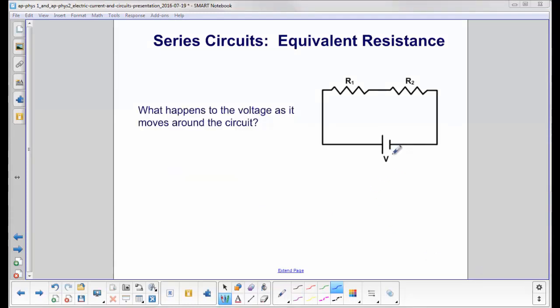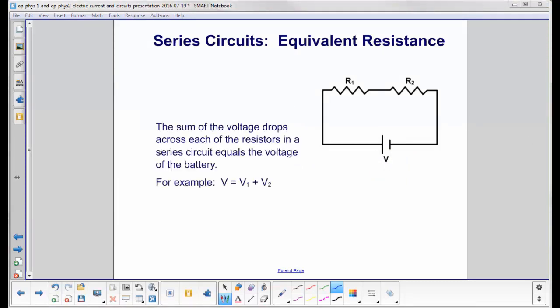What happens to the voltage V, which is the energy given to each charge, as it moves around the circuit? This one's a little trickier, so let's recall what voltage is, electric potential. It's the potential energy per charge.